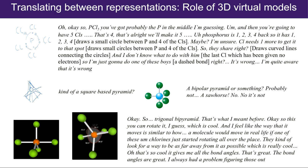That particular student who drew the last structure explained as they went: 'OK so PCl5, you've got probably the P in the middle, and then you're going to have five CLs... Phosphorus is one, two, three, four...' They draw small circles between P and four of the chlorines then question themselves: 'Maybe I'm unsure. Chlorine needs one more to get to that spot.' They're trying to move their way through a Lewis structure with curved lines for sharing. The student hadn't either the language or the representational competence for drawing Lewis structures, and they recognized this. So they added a dash bond at the side, knowing instantly it was wrong: 'I'm quite aware that it's wrong.' Then they drew a tetrahedral structure trying to get the 3D shape and started trying to think of the name — a square base pyramid.